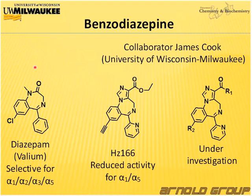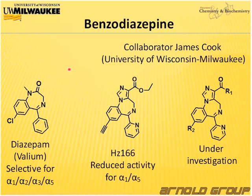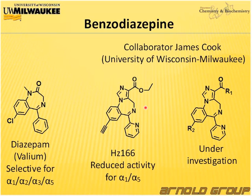The most well-known benzodiazepine is probably diazepam, also known as Valium, which was developed a long time ago. However, this compound is relatively unselective regarding the alpha subtypes. I am collaborating with Dr. James Cook at the University of Wisconsin-Milwaukee, who has worked over 30 years developing new benzodiazepines. He has a very successful compound called HC-166, which has reduced activity for alpha-2 and alpha-5, and increased activity for alpha-2 and alpha-3, making it a very good anxiolytic with non-sedative effects.